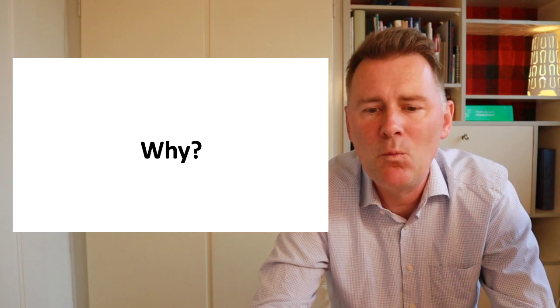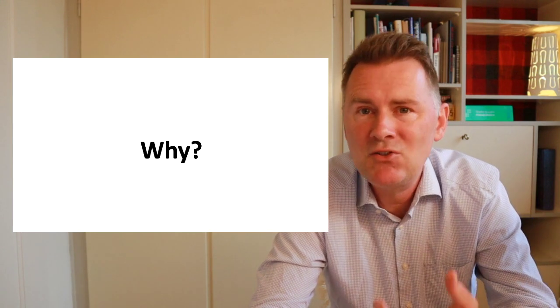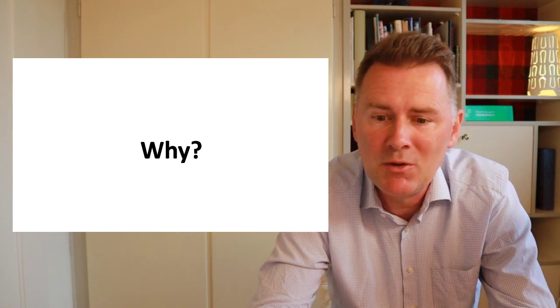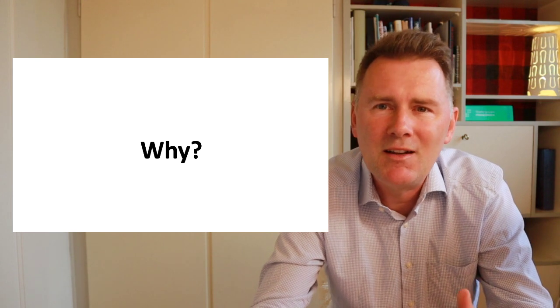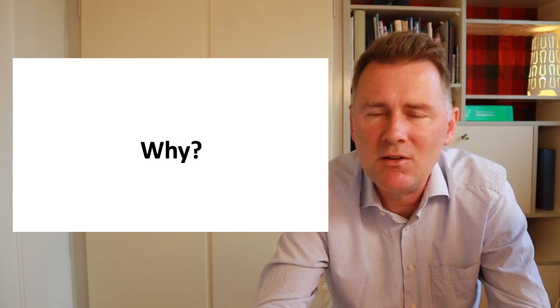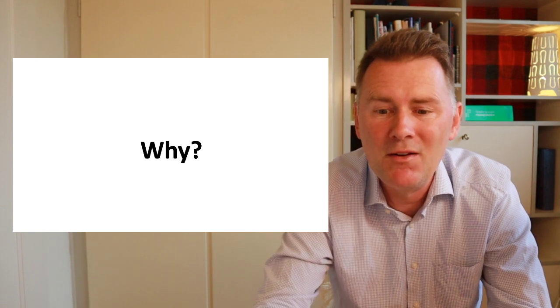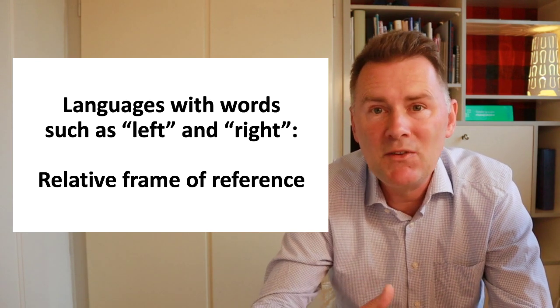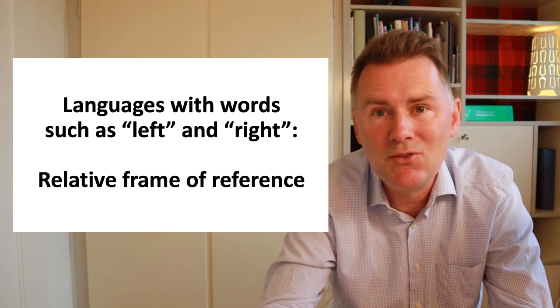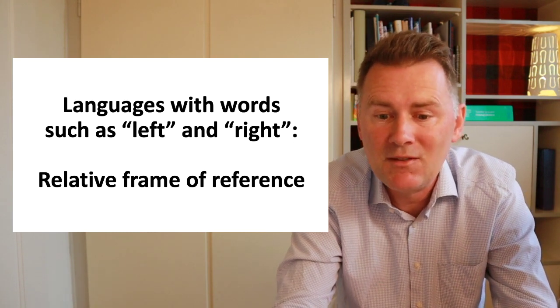The explanation has to do with the fact that languages such as Tzeltal and Longu have a way of expressing spatial relations in a way that differs a lot from the way Dutch and Japanese do it. Dutch, Japanese, and also French, Spanish, English, and German have words for left and right that are relative to the speaker. So what's left to me is actually on your right if we're opposite one another. Languages with words such as left and right are said to use the relative frame of reference.